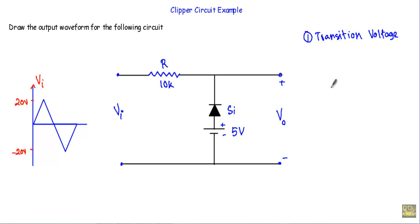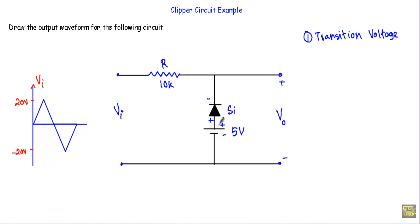To calculate the transition voltage, we will start our analysis from the half cycle that will connect this diode at the same polarity as the bias voltage. The positive terminal of this bias voltage will be connected with the P side of the diode and the negative terminal will be connected with the N side.